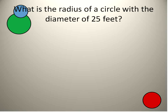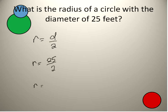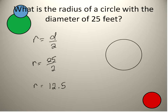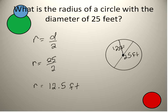The other type of question we can get is if we're given the diameter and asked to find the radius. What is the radius of a circle with a diameter of 25 feet? I can use my equation: radius is equal to the diameter divided by 2. My radius is equal to 25 divided by 2, therefore my radius is equal to 12.5 feet. I could also draw a picture, label the diameter as 25 feet, and any radius would be half of that: 12.5 feet. Either way, the relationship between a radius and a diameter is that the radius is half the length of the diameter.